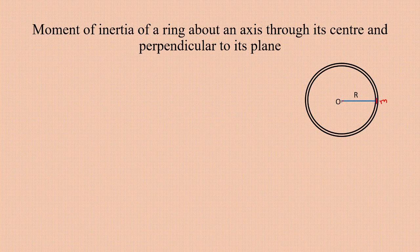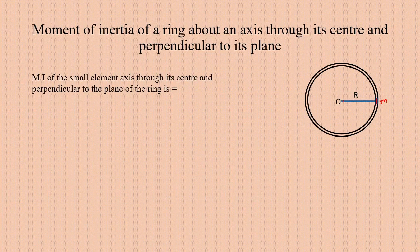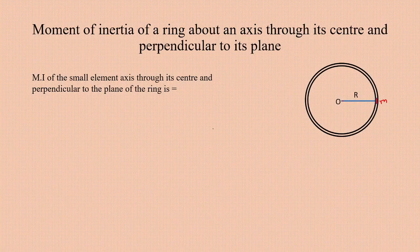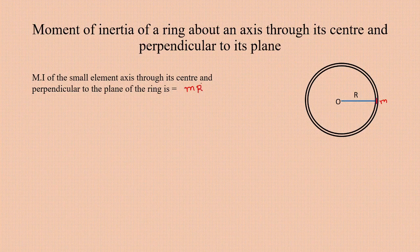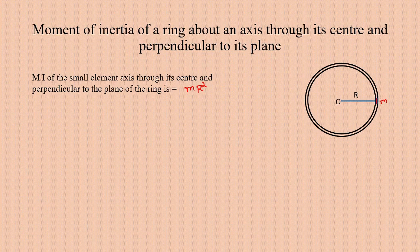The moment of inertia of a single particle about an axis of rotation is M·R². So here, the moment of inertia of the small element about the perpendicular axis passing through the center is m·R². The moment of inertia of the entire ring is obtained by taking the summation of the moments of inertia of all such small elements.